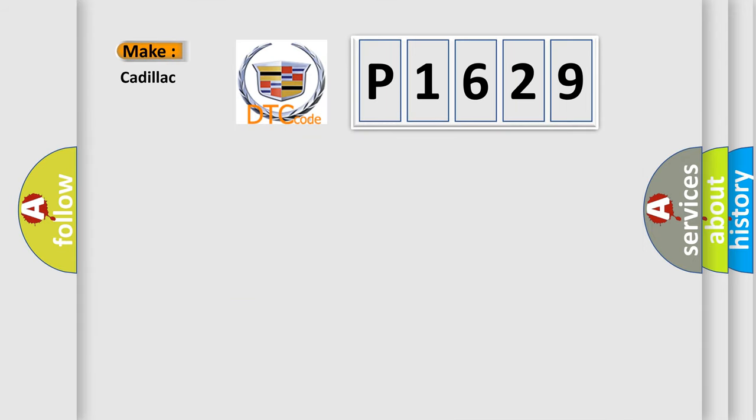So, what does the diagnostic trouble code P1629 interpret specifically for Cadillac car manufacturers? The basic definition is combination meter timeout.